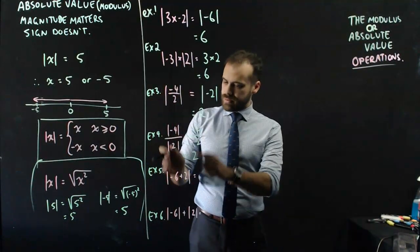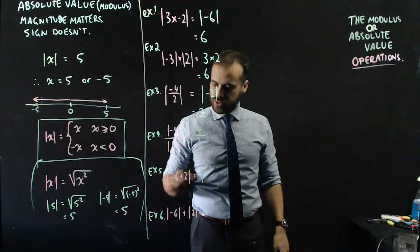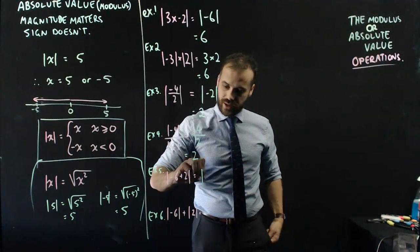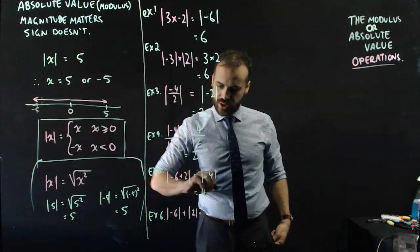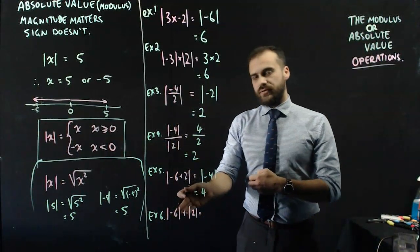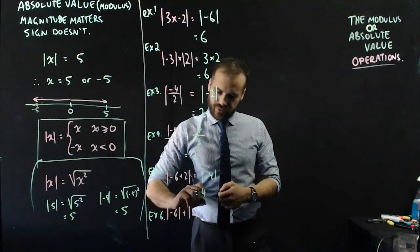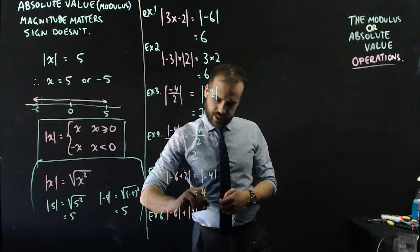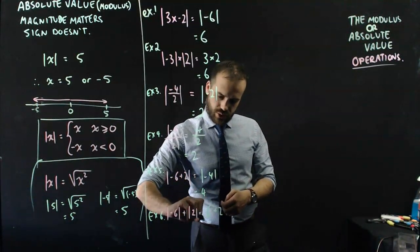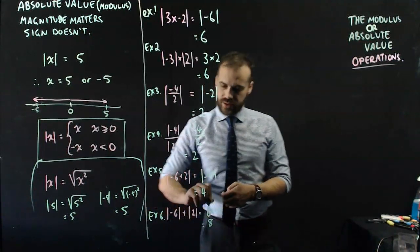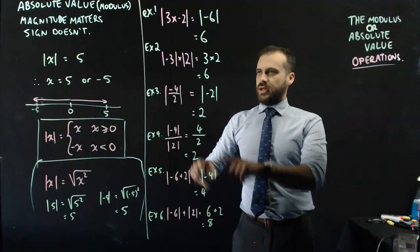The absolute value of negative 6 plus 2 is equal to the absolute value of negative 4, which is 4 — the sign goes away. And the absolute value of negative 6 plus the absolute value of 2: the absolute value of negative 6 is 6, the sign goes away, the absolute value of 2 is 2, giving an answer of 8. That's probably the most interesting one.